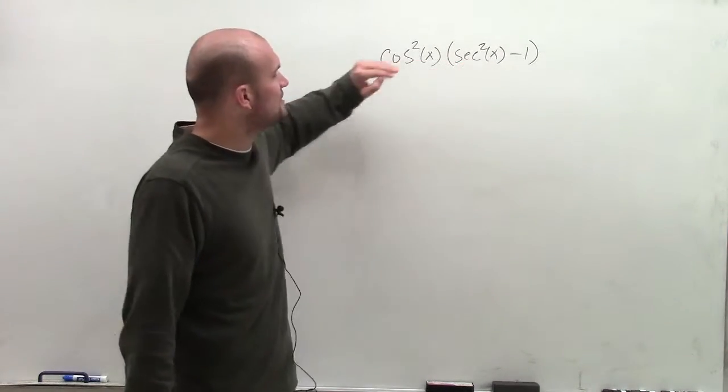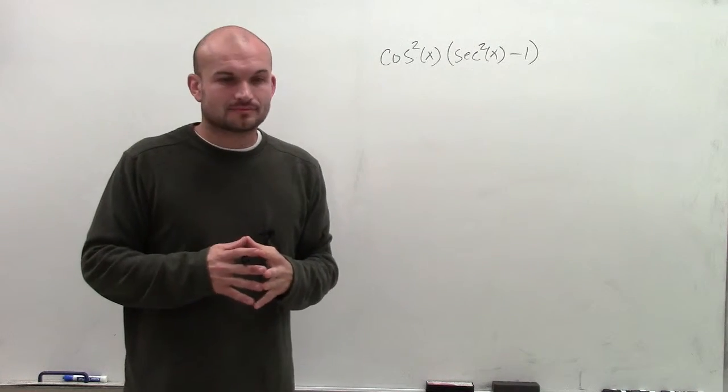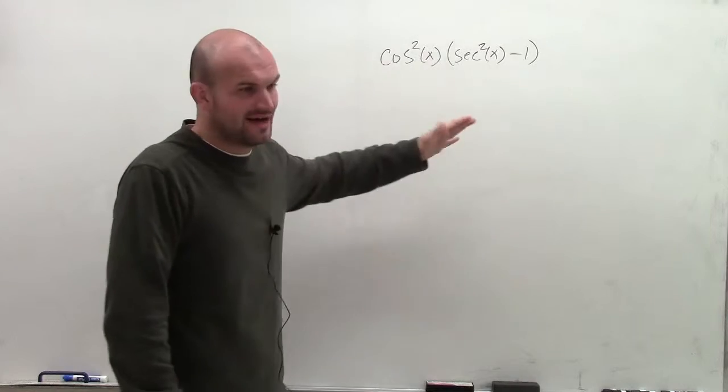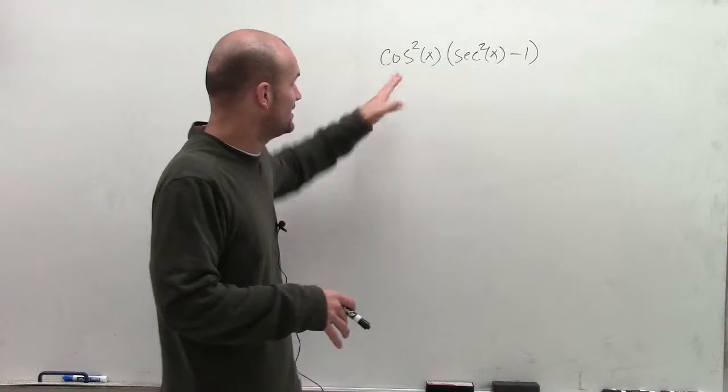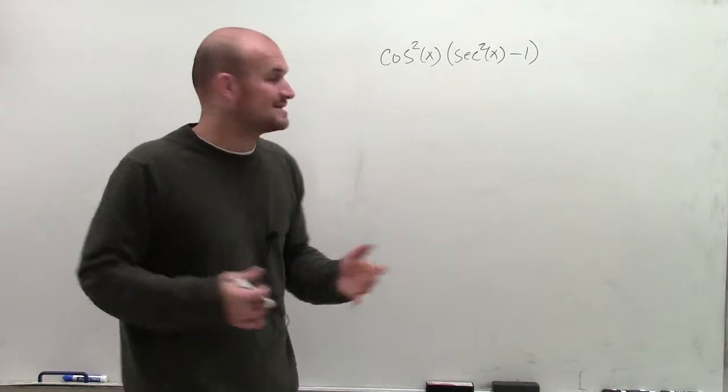When I initially look at any trigonometric function squared, I automatically think of using my Pythagorean identities. Now, I have cosine squared of x. I could convert that using Pythagorean identity, but I kind of like it in the simplified form, right? Even though I do understand that it could be 1 minus sine squared.